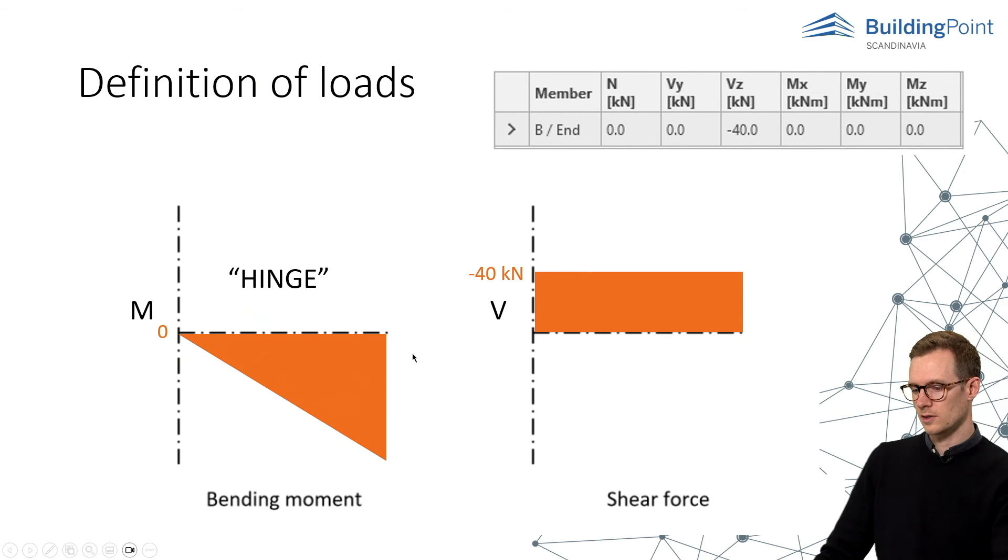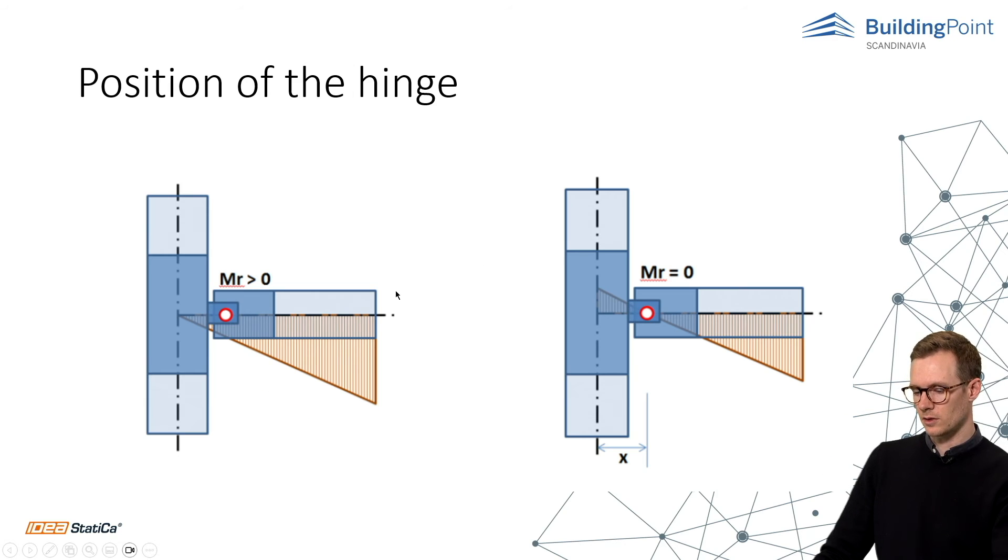But in case you have a hinge connection, typically a fin plate with one bolt or two bolts, there is zero moment in the connection. In the theoretical global model, it looks like this connection on the left side. But in the real model, the hinge is located at an X distance from the node. So the hinge is formed in the fin plate and the moment should be zero in the position of the hinge.